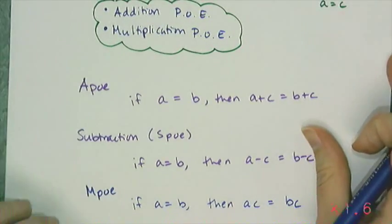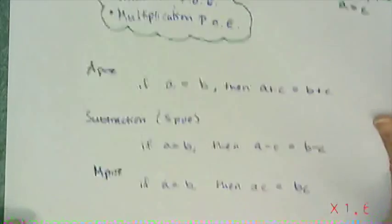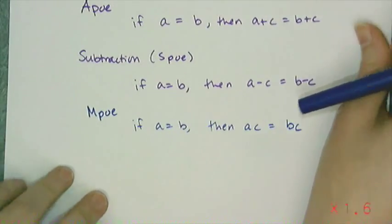Now I have to be careful. I have to actually multiply the entire side of the equation. So if there are multiple terms on one side of the equation, I have to use parentheses.